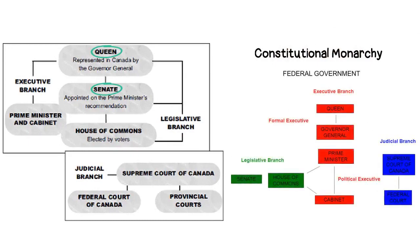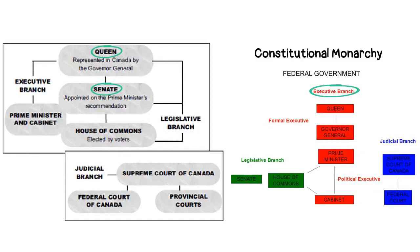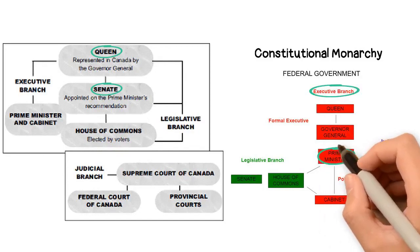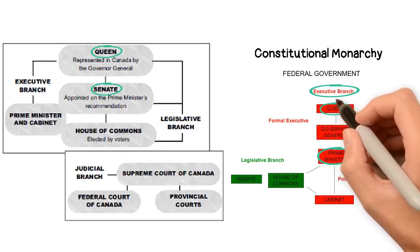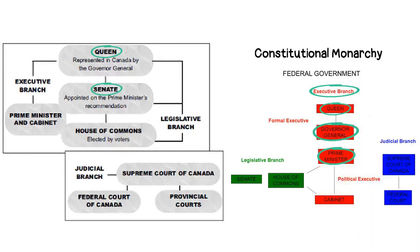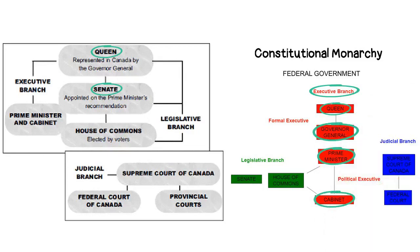The next branch of the Canadian government is the Executive Branch, which also has three levels: the Prime Minister, the chosen leader of the political party who wins the most seats in the House of Commons; the Queen and/or Governor-General; and the Cabinet, who lead departments and are chosen by the Prime Minister.